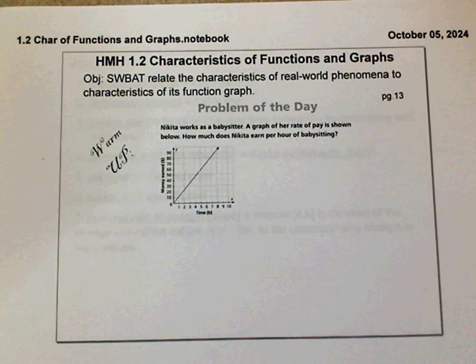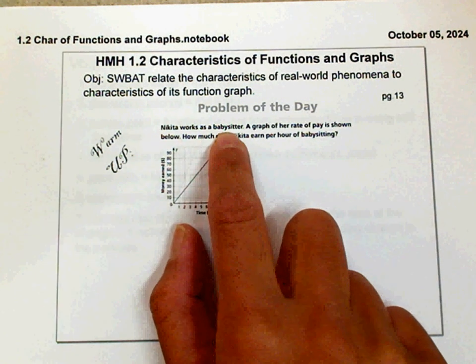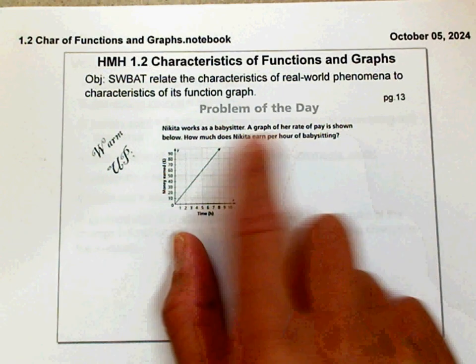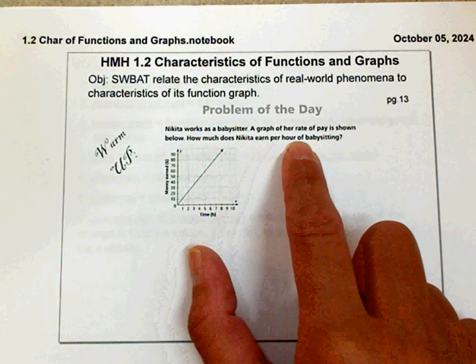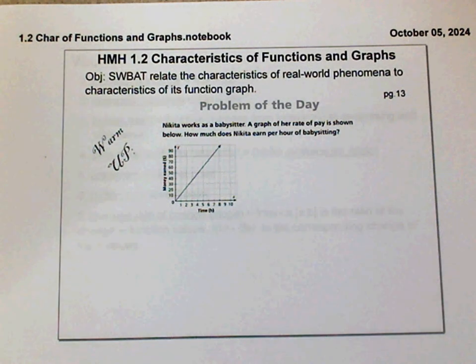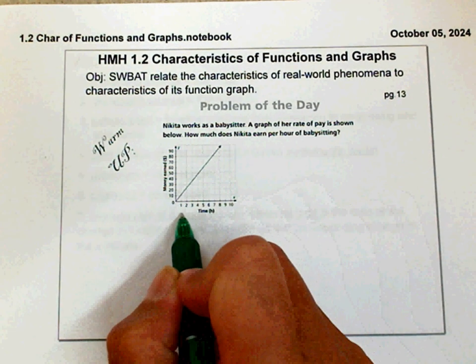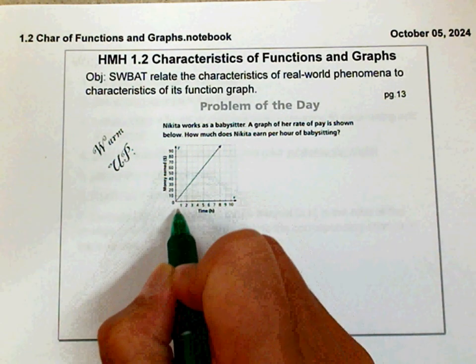Here's your warm-up for today. The question goes: Nikita works as a babysitter. A graph of her rate of pay is shown below. How much does Nikita earn per hour of babysitting? If you look at that, you might want to try to find some coordinates, an easy one that you can kind of tell. Here's the time she works, how many hours she works, with the money she earns.